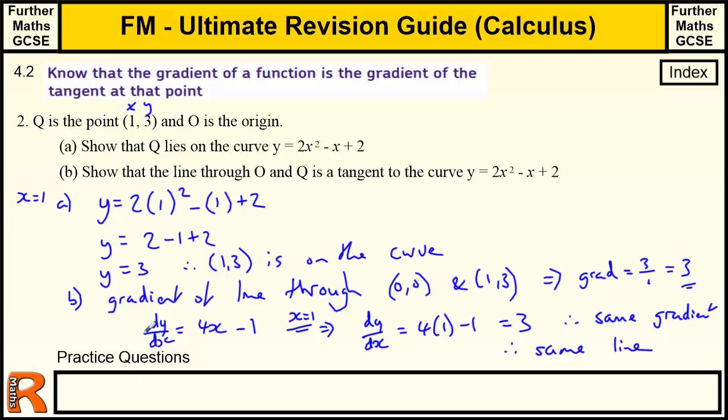Two lines with the same gradient that go through the same point are the same line. So that's question 2 — all we have to do is show they have the same gradient.